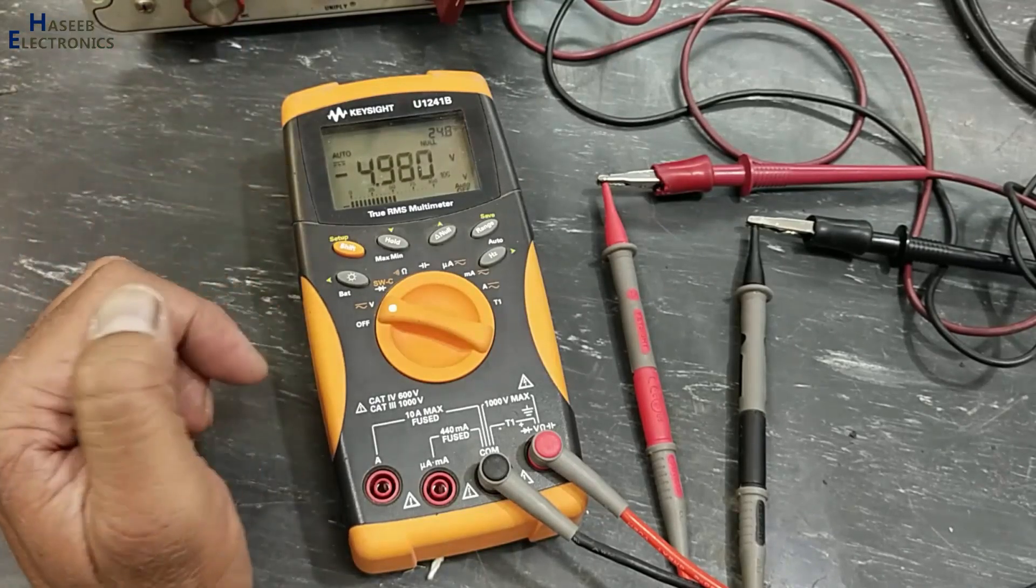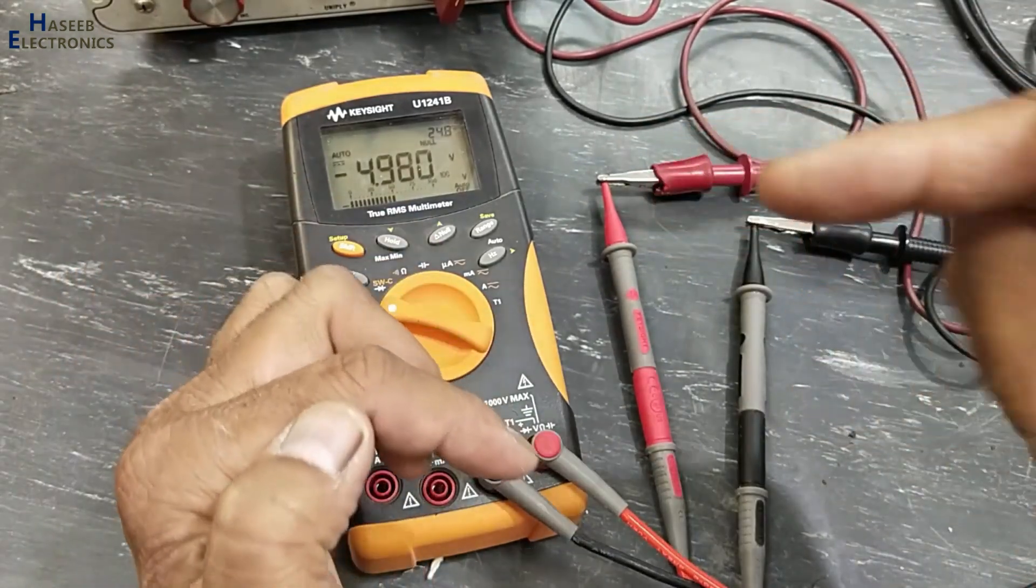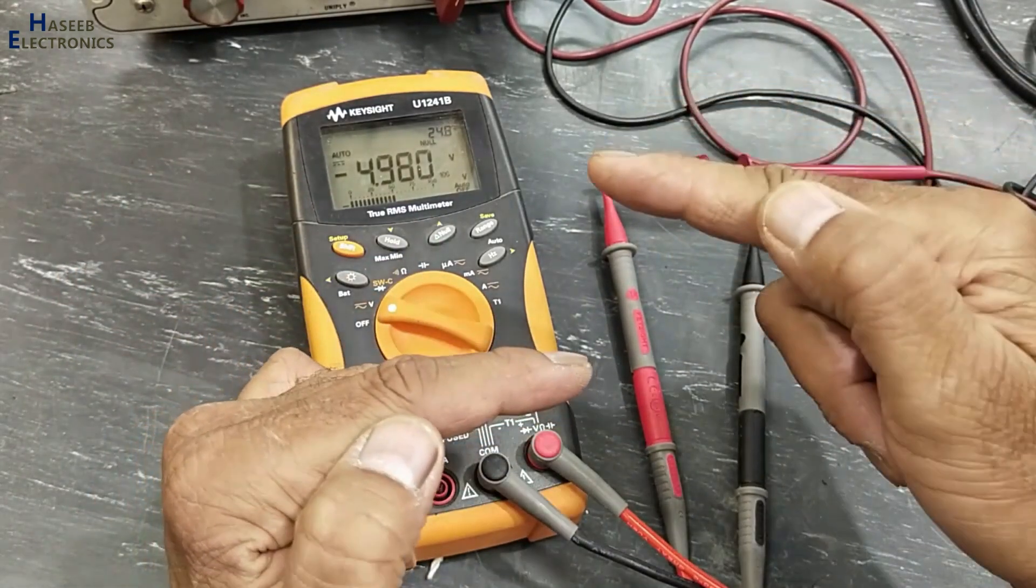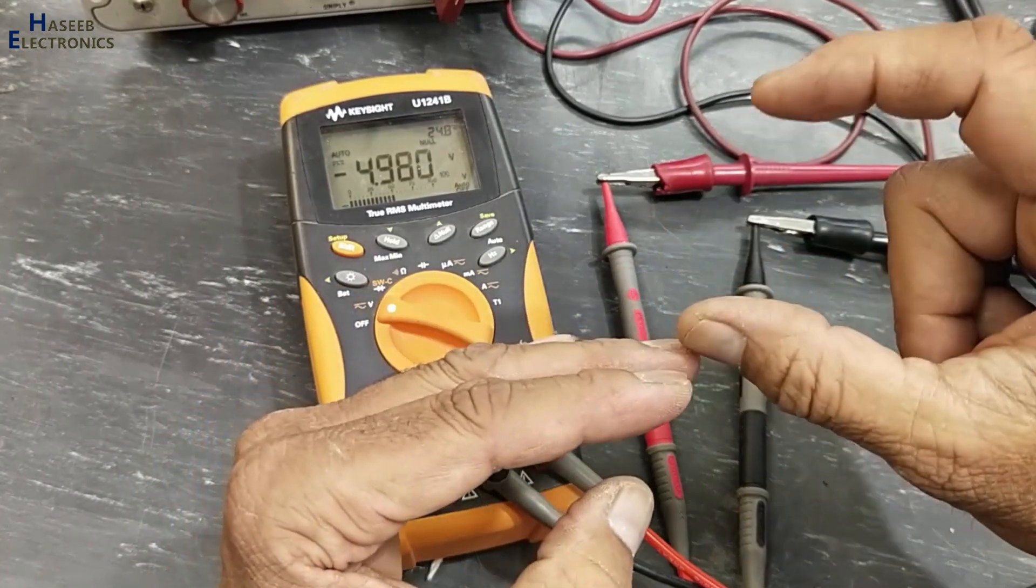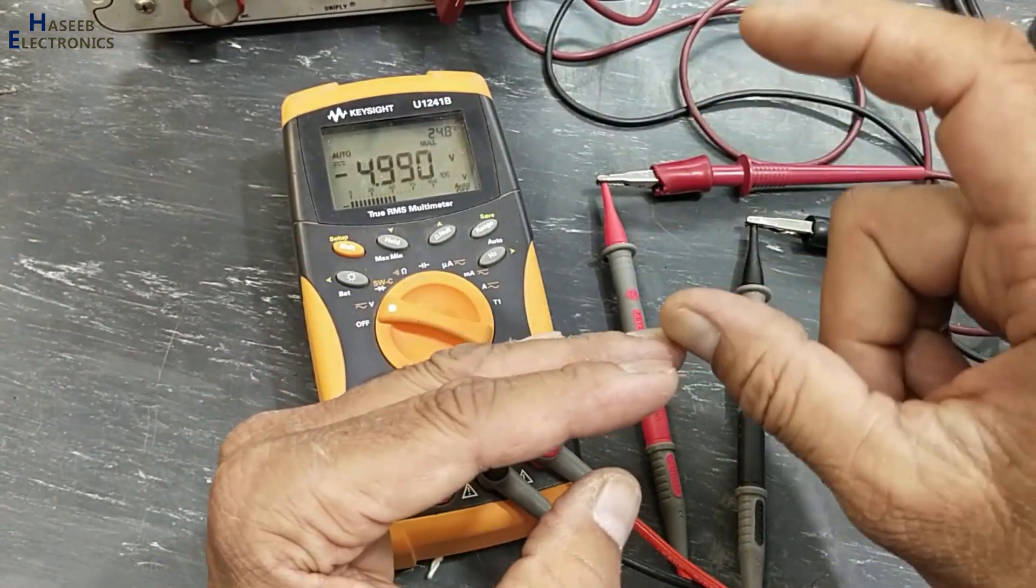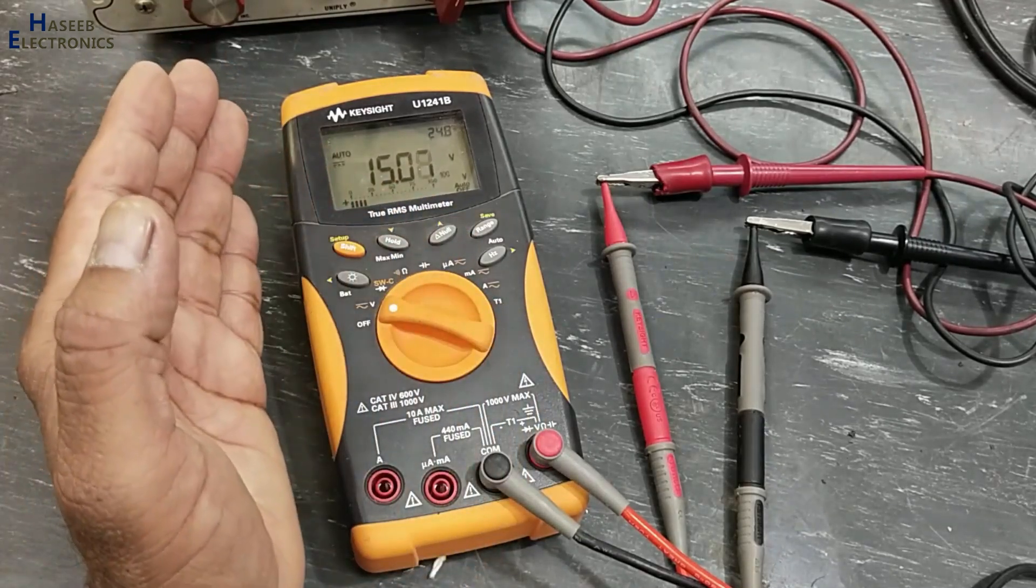Let's suppose 5 volt drop, that means the present value will be there 15 volt. So using this function we can say this power supply or this circuit have plus minus 5 volt change. Now it is showing 15 volt, the present value is 15 volt.